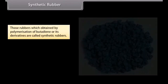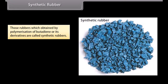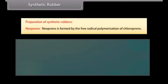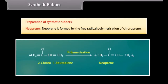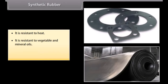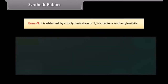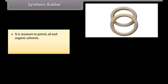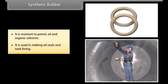Synthetic rubber is more elastic and has greater abrasion resistance. Neoprene is formed by free radical polymerization of chloroprene; it is resistant to heat and to vegetable and mineral oils, and is used for conveyor belts, gaskets, and hoses. Buna-N is obtained by co-polymerization of 1,3-butadiene and acrylonitrile; it is resistant to petrol, oil, and organic solvents, and is used for making oil seals and tank linings.